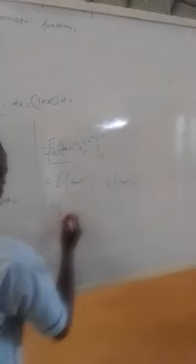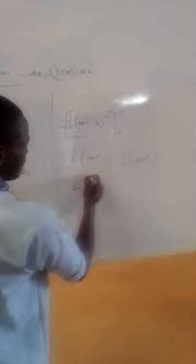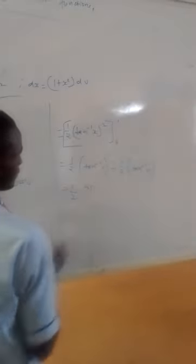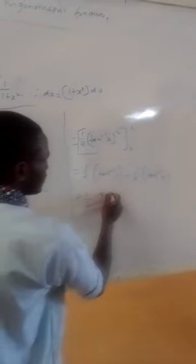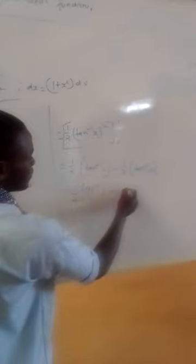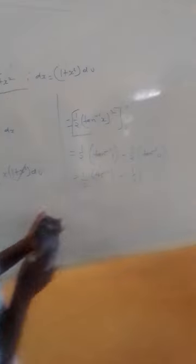So tan inverse of 1 in the upper limit. And then we are going to put this in the upper limit. This will give tan inverse of 0.